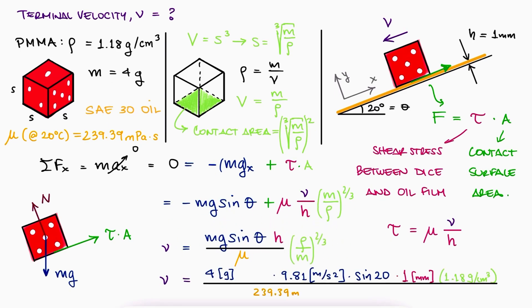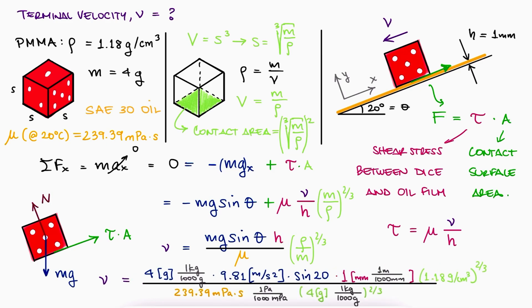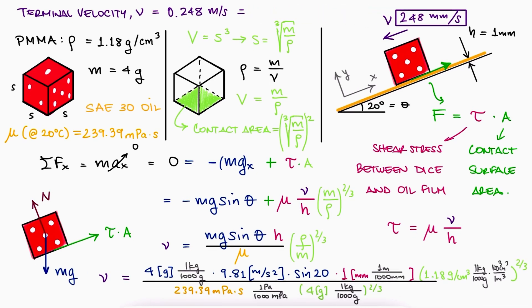We substitute all values, we convert all units to standard units, and find that the terminal velocity of the dice is equal to roughly 248 millimeters per second.